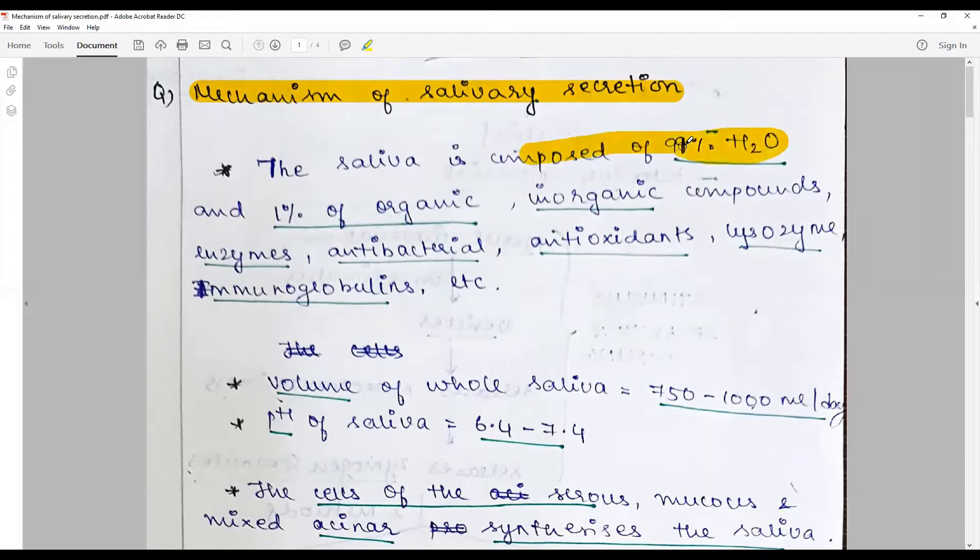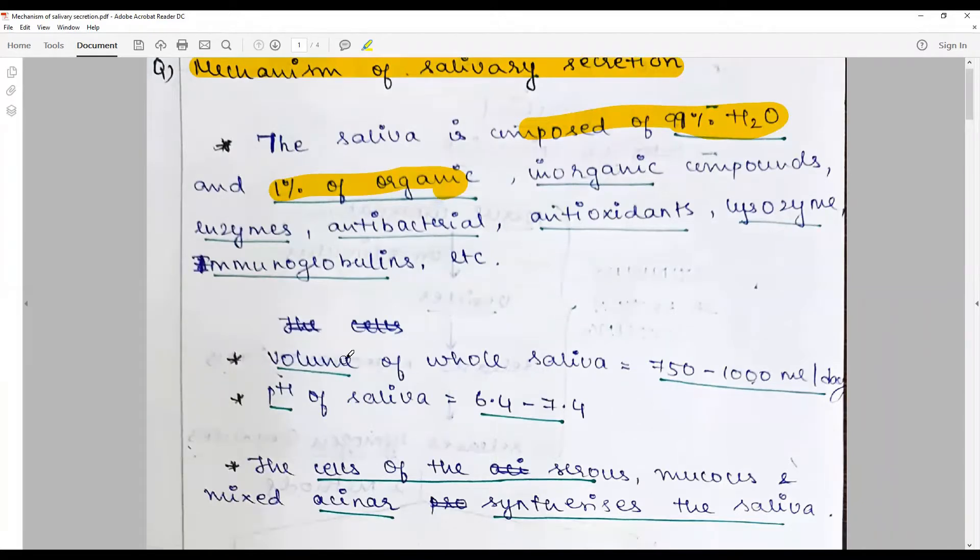To give a brief introduction, saliva is composed of 99% water and 1% organic as well as inorganic compounds, including enzymes, antibacterial, antioxidants, lysozymes, immunoglobulins, etc. The per day volume of whole saliva is about 750 to 1000 ml per day with a pH of about 6.4 to 7.4.